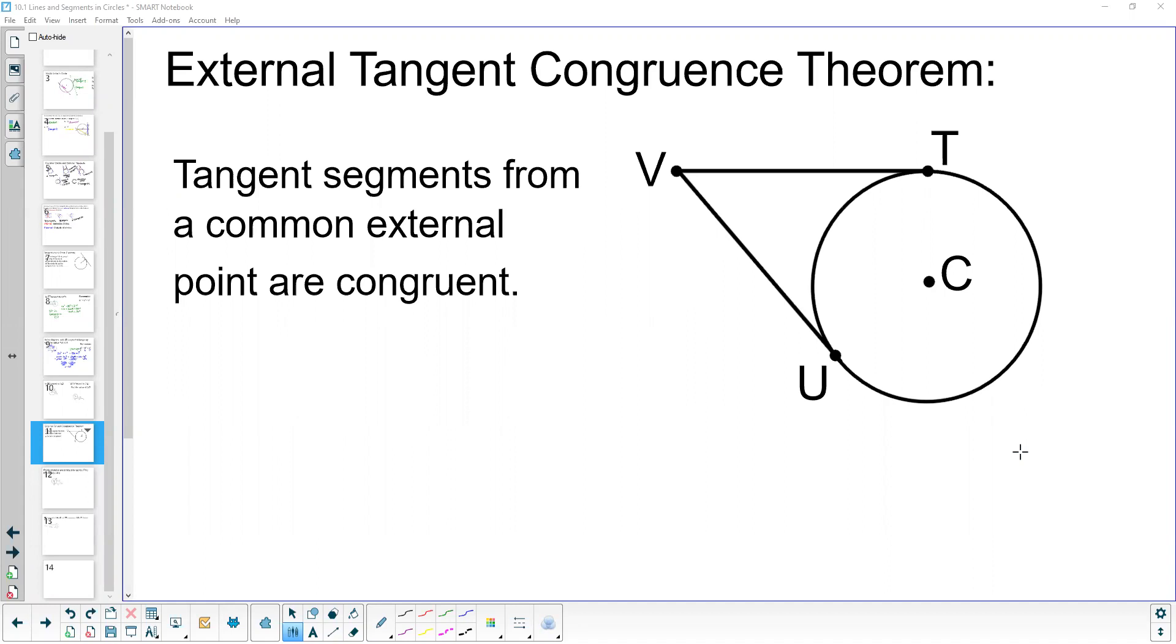So if UV is a tangent where U is our point of tangency and VT is a tangent line to circle C where T is our point of tangency, then UV is going to be the same length as VT.